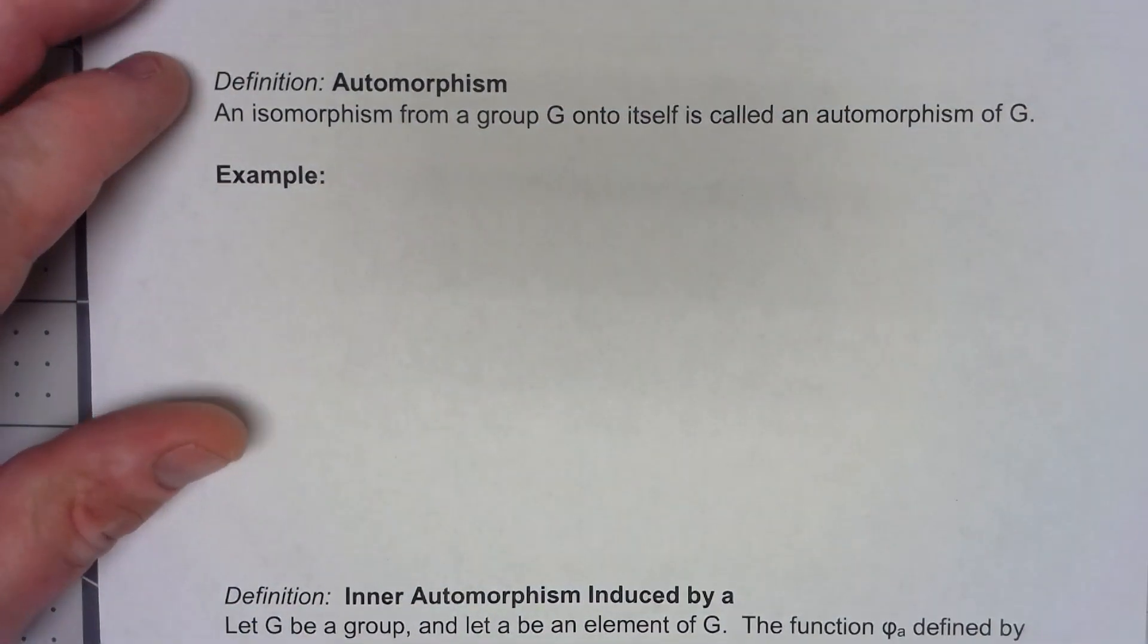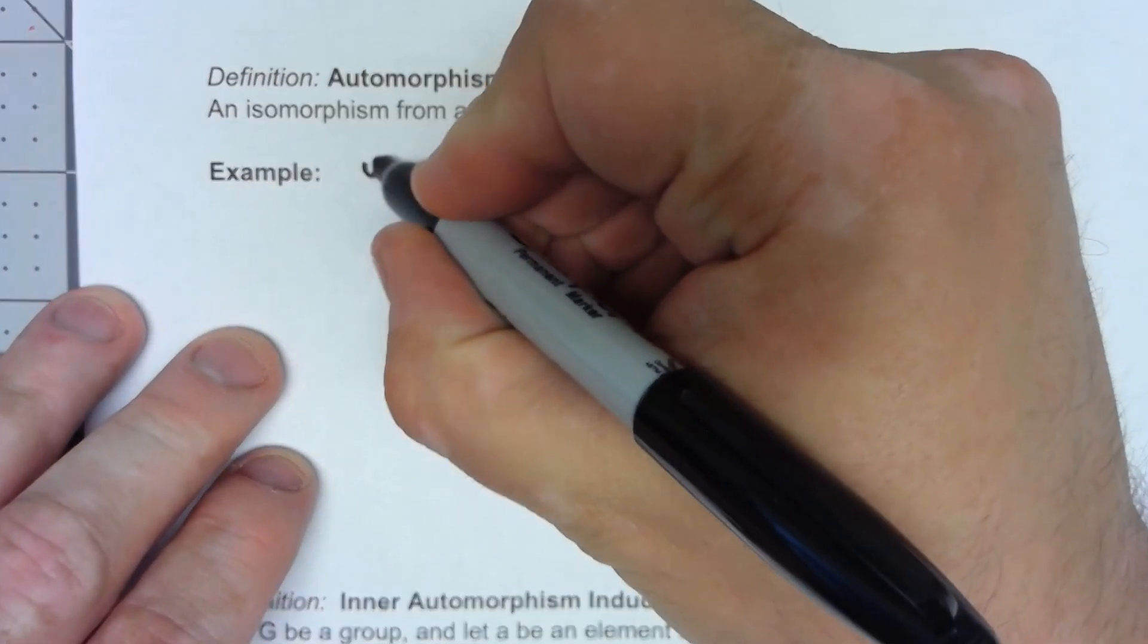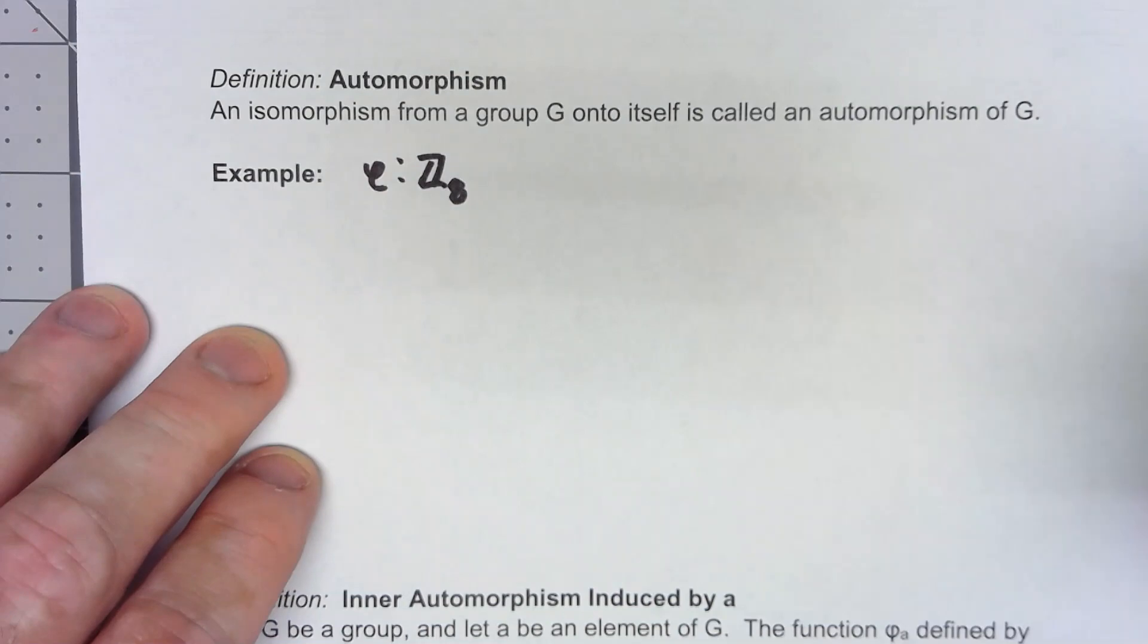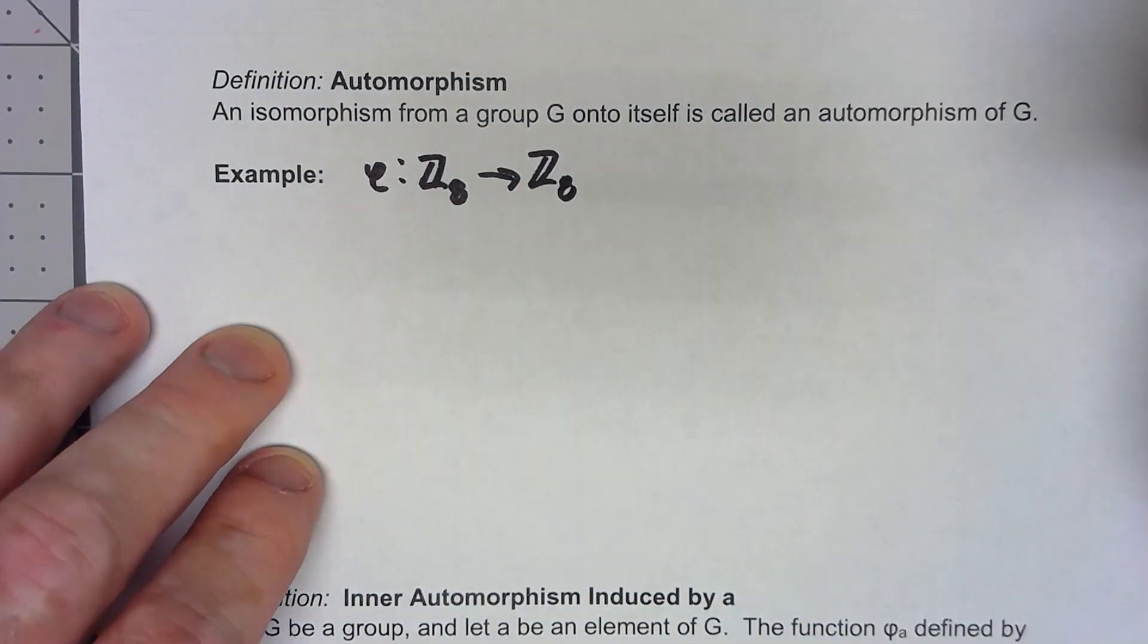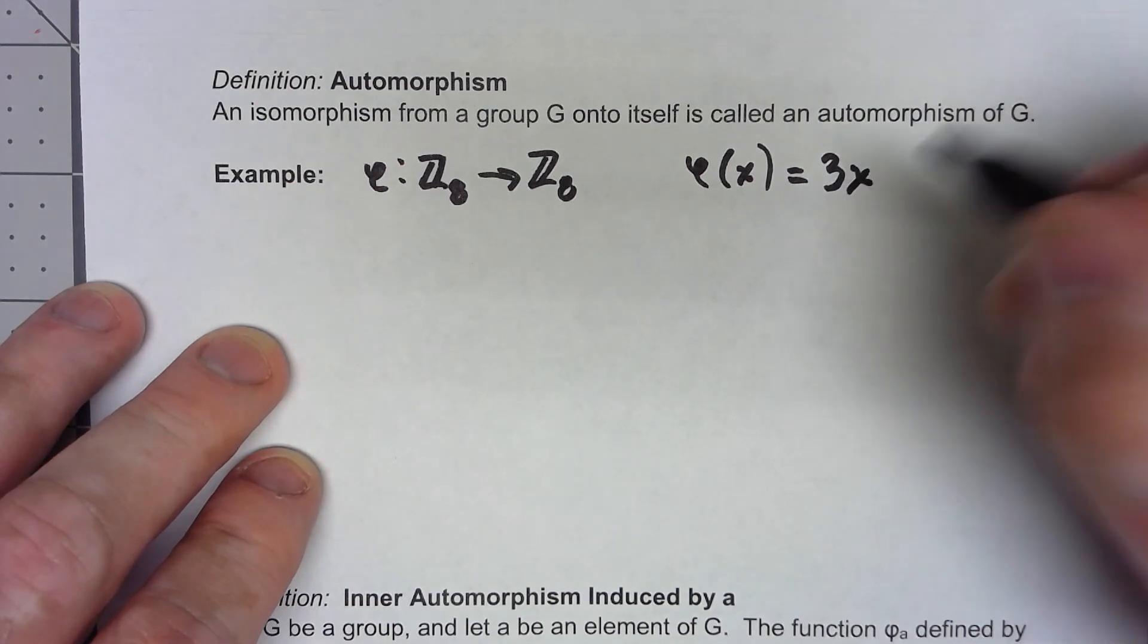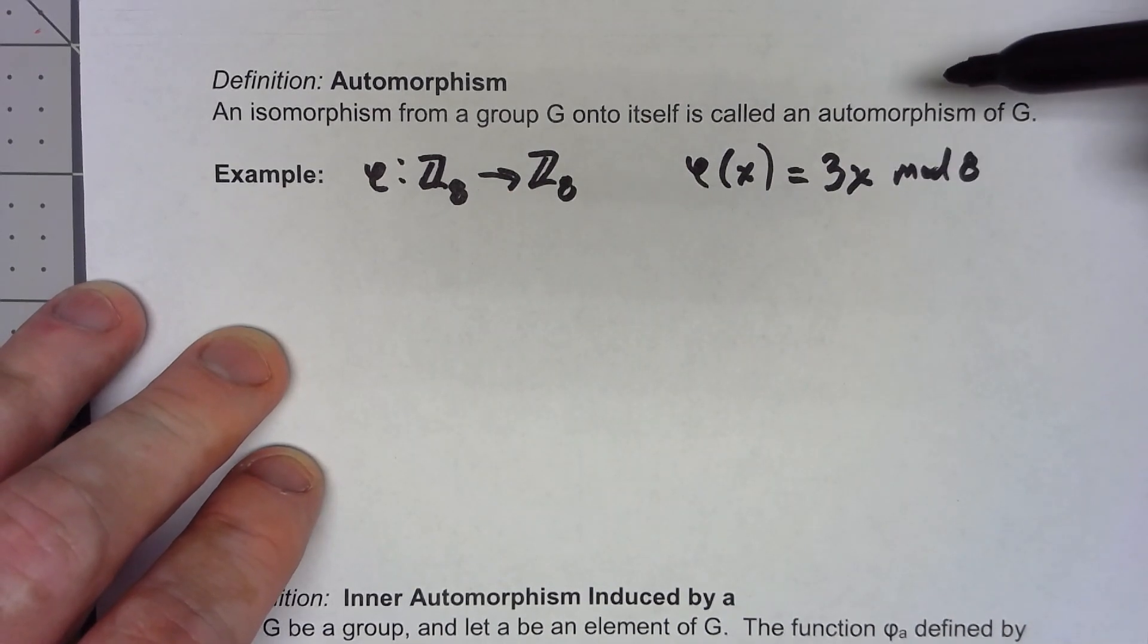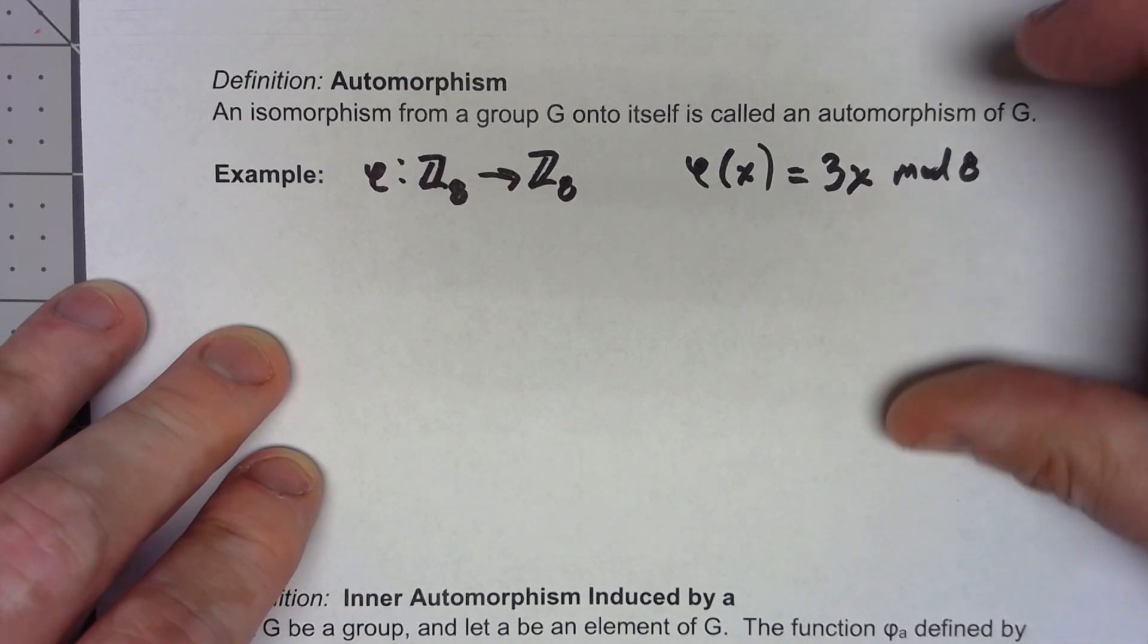Let's take a look at another one here. Let's say I've got phi going from Z8 under addition mod 8 to itself, of course, and that function is going to be phi of x equals 3x mod 8. So to show that this is an automorphism, we need to show that the function is one-to-one, onto, and has the homomorphism property.